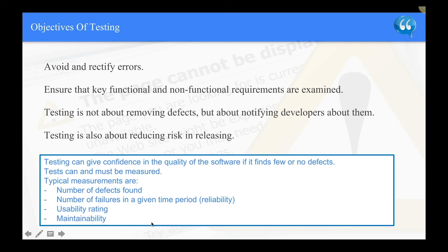What are the objectives of testing? To avoid and rectify errors, and to ensure that key functional and non-functional requirements are examined. Testing is not about removing defects, but about notifying developers about them. Testing is also about reducing risk and releasing. Testing can give you confidence in the quality of the software if it finds few or no defects. Tests can and must be measured — typical measurements are number of defects found, number of failures in a given time period, reliability, usability rating, and maintainability.